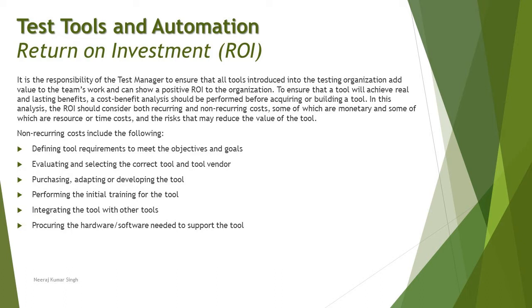In this analysis, the ROI should consider both recurring as well as non-recurring costs. Organizations often only think about non-recurring costs initially — the big upfront costs like tool acquisition, initial licensing, and infrastructure training. But they don't account for consistent mentoring, time-to-time upgrades, patches, and hot fixes released by the vendor. Both types of cost — monetary and resource/time-based — along with associated risks that may reduce tool value, should be considered for an effective cost-benefit ratio.